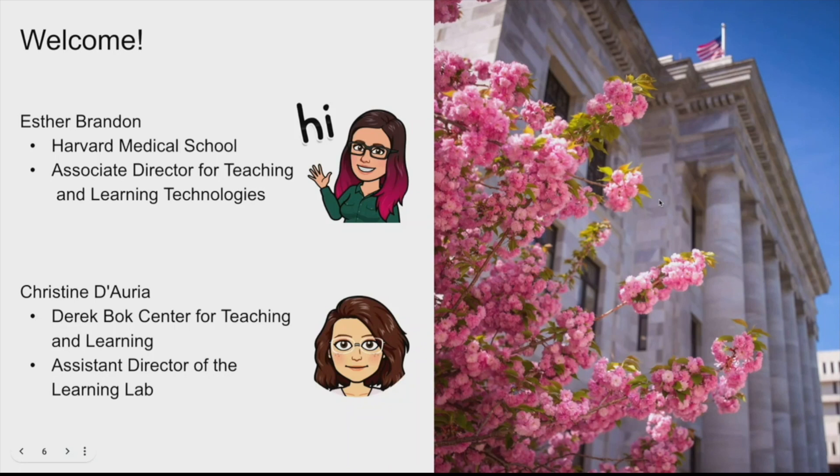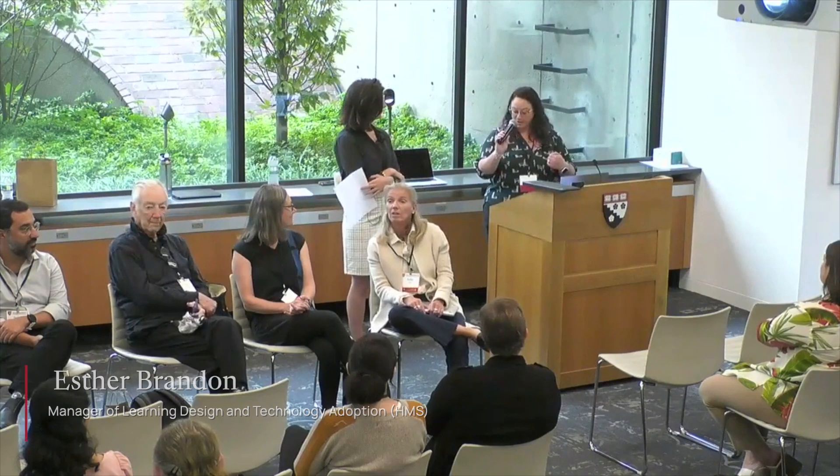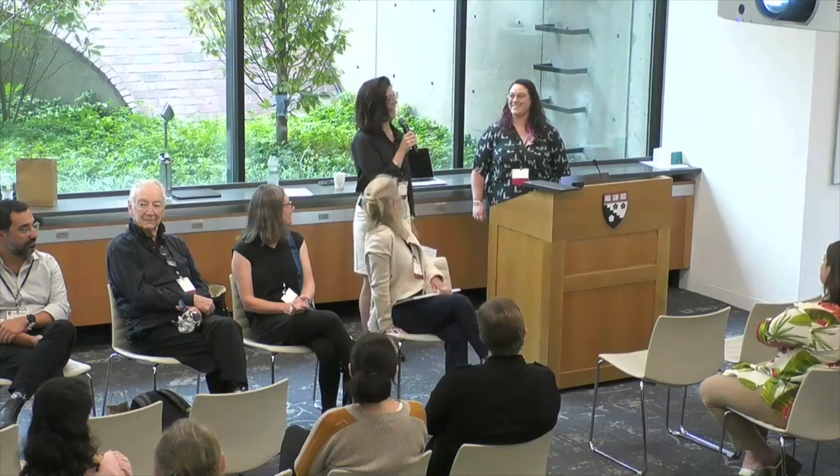If you can't tell by my pink hair, my name is Esther. I work at the medical school. I'm the associate director of teaching and learning technologies. I am a five-foot tall, white-passing queer woman with an invisible disability, and I'm wearing a green shirt with alpacas on it. My name's Christine, and I am a white woman with medium-length brown hair, wearing glasses and a plaid shirt.